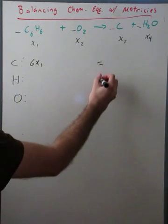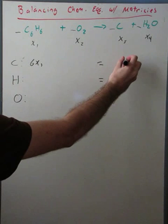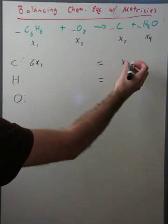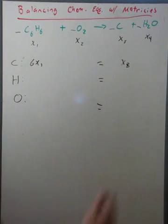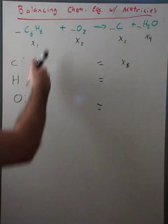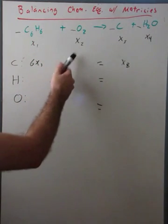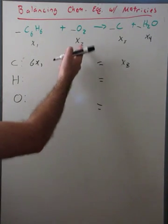And then each of these are going to equal something on the other side. So we're going to have one carbon here, which is going to be 1x3, or x3. Okay, it's still good on the camera. So then we're going to do the same for hydrogen. And if there were carbons here we would add it with x2, but they're not. It's a simple equation.